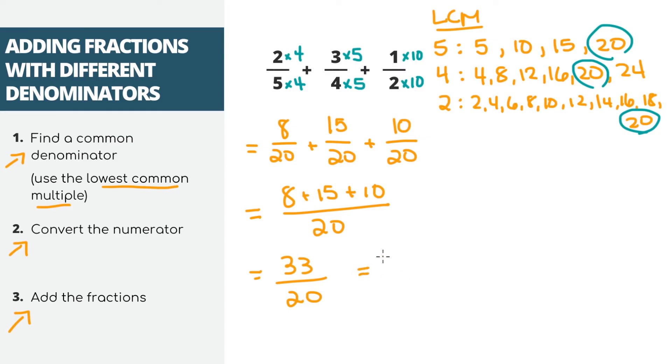If we want to convert it to a mixed number, 20 goes into 33 once, and we have 13 left over. That is our answer as a mixed number.